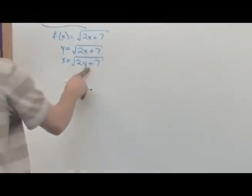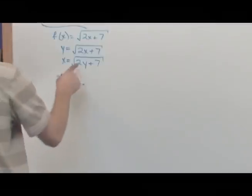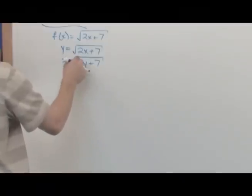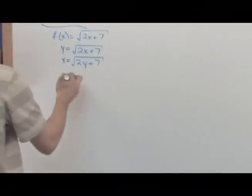Now I need to solve for y, so I need to start isolating y. First thing I'm going to do is get rid of this radical, so I'm going to square both sides because the opposite of a square root is a square.